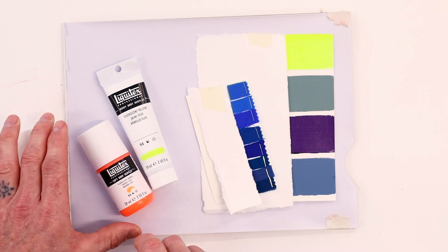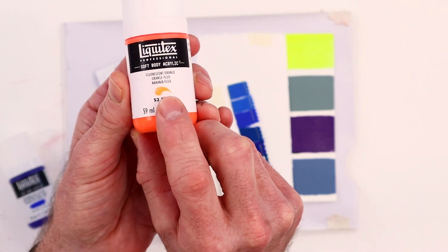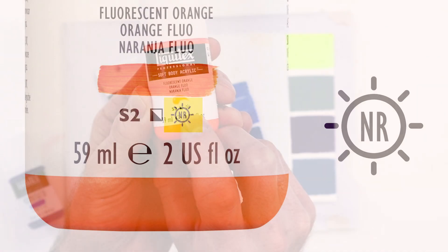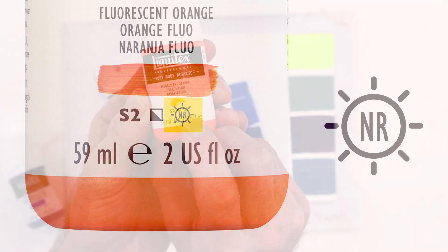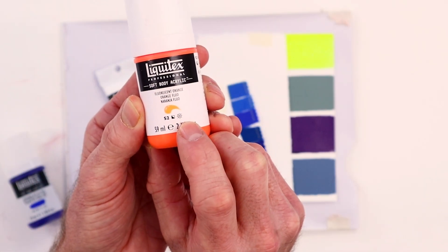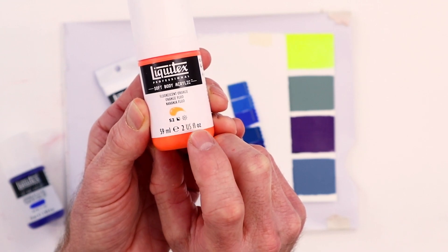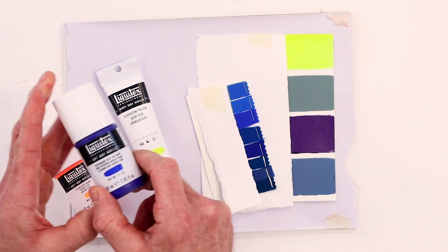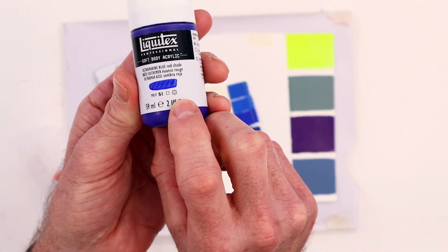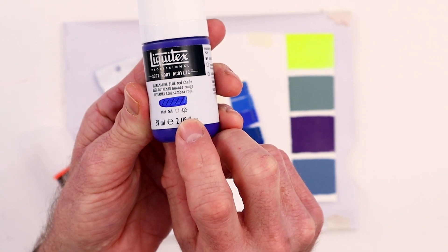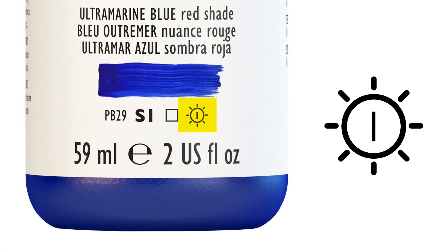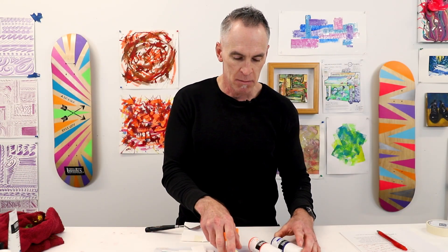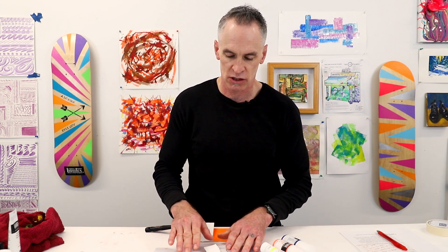Now, if we look at something like this — this happens to be the soft body range and this is fluorescent orange — we don't have a color index number. It says NR, not rated. So it's not rated for lightfastness. It doesn't have pigment information because it will not be able to withstand the assault of UV rays over time. Going back to the ultramarine blue, there's a little symbol that looks like the sun with the Roman numeral one in it, and that tells us that's a very lightfast color.